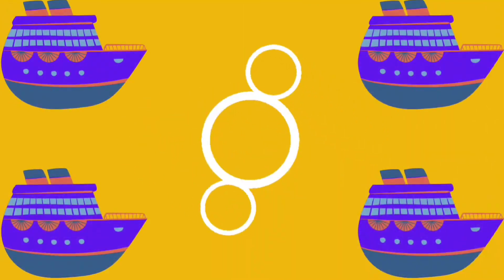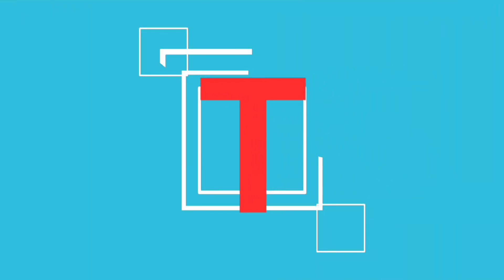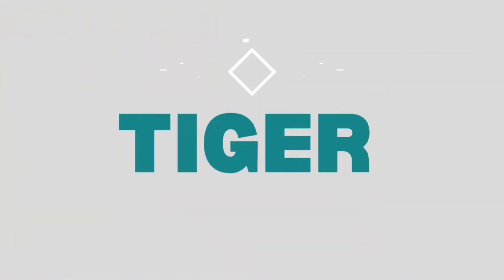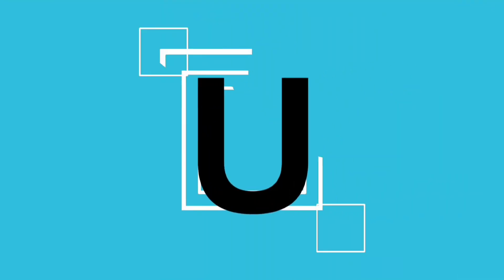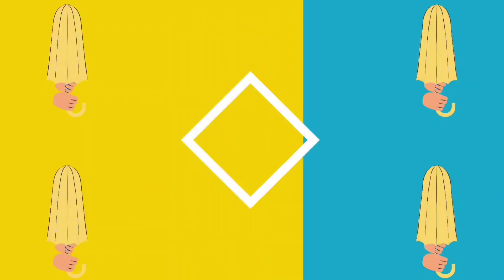S. S is for Ship. T. T is for Tiger. U. U is for Umbrella.